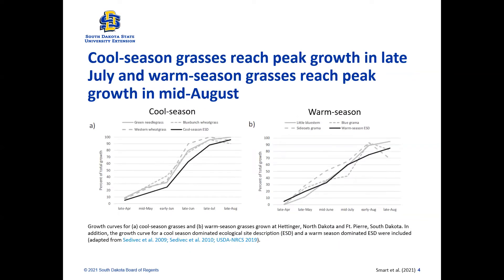If we take a closer look at the growth curves and how they accumulate over time, we see that cool season grasses reach their peak in late July and warm season grasses reach their peak in mid-August. The different grasses are shown by the different gray lines, and the dark line is basically a modeled ecological site description for our cool season or warm season grasses.